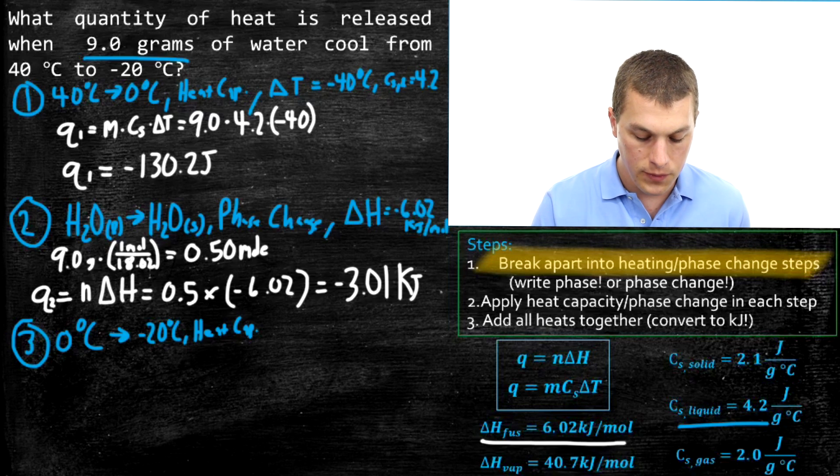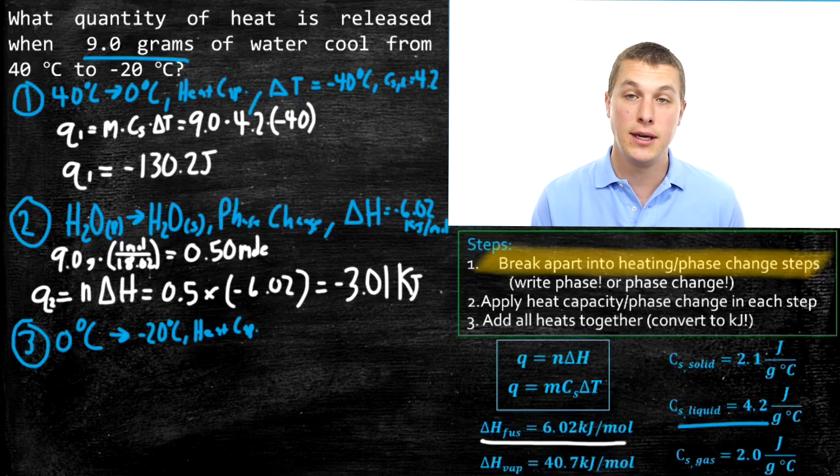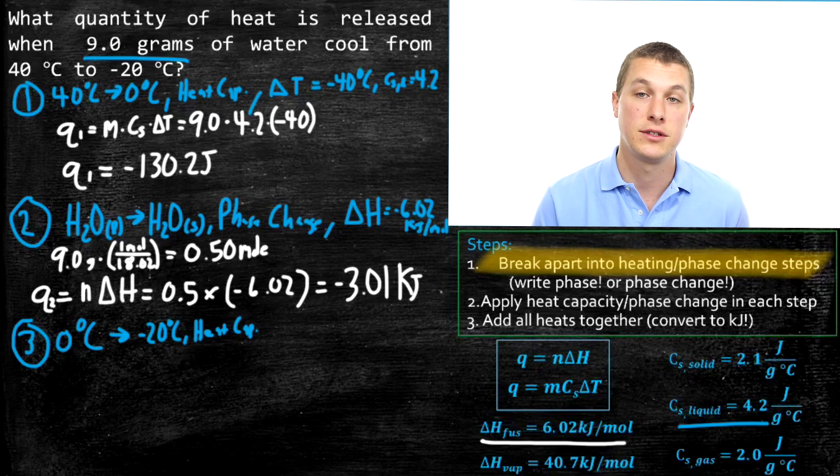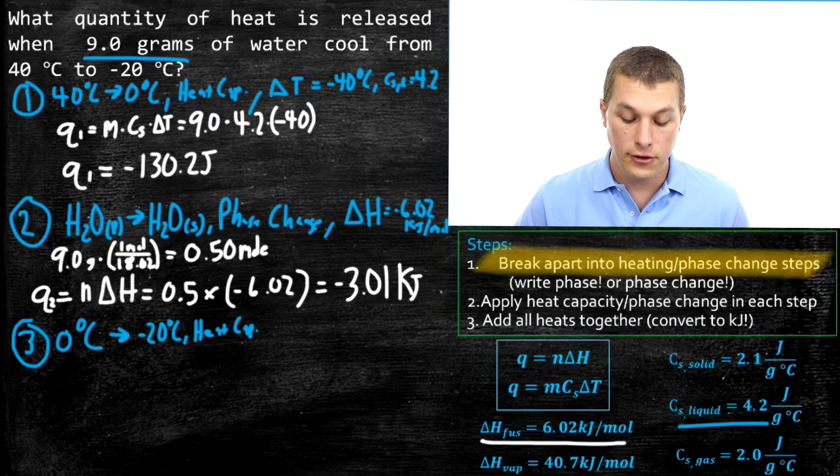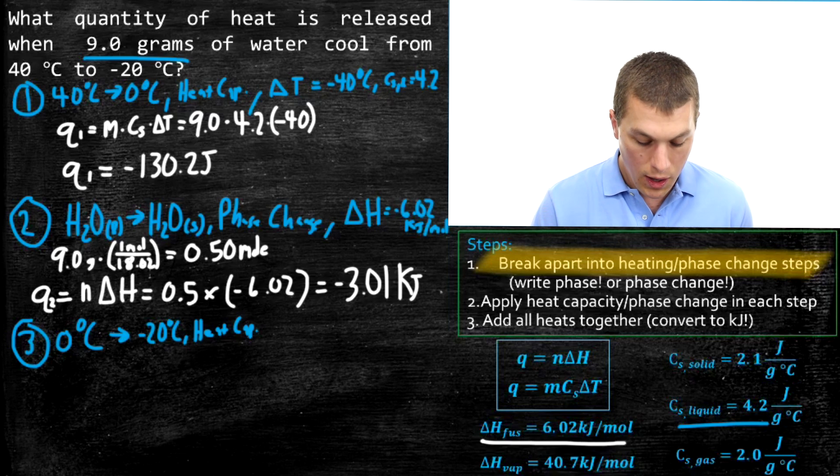Notice in my top problem, I got joules out, because my heat capacity is in joules per grams degree Celsius. In my second problem, I got kilojoules out, because my enthalpy has the units of kilojoules.